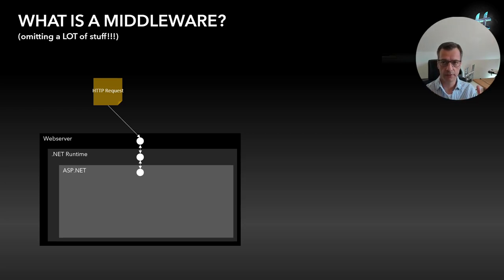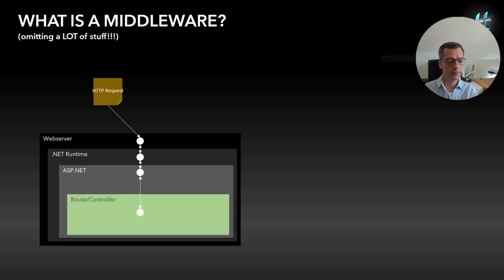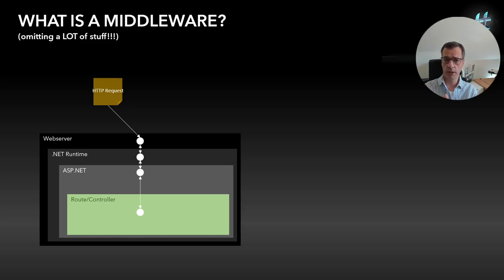ASP.NET sits on that process. This is what you configure in your startup — telling it this is what reacts to the web server request using the .NET runtime. The request is then handed through to ASP.NET. At some point, this green area is your code which you programmed — usually a route hitting a controller — and this is the first time where you can put a breakpoint when debugging locally and see the request coming in.